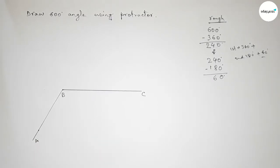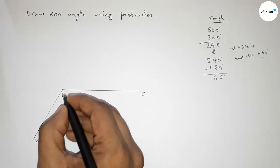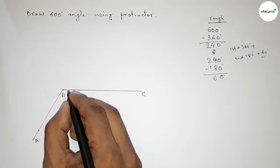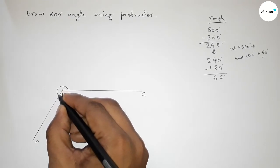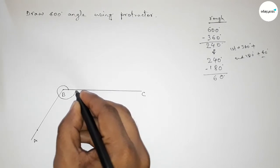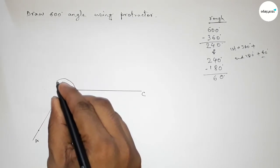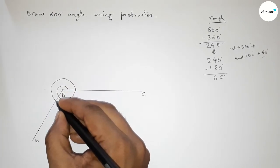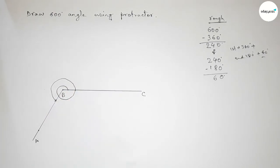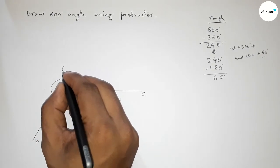First, taking a round—this is a full 360-degree angle. Now continuing from here, this is a total of 600 degrees.